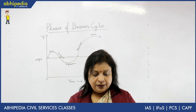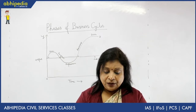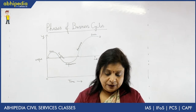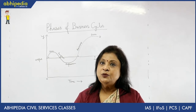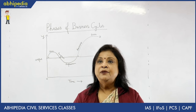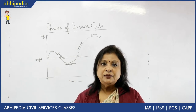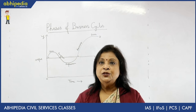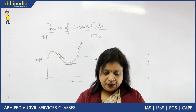Under dear money policy, the bank rate will be increased, CRR (cash reserve ratio) and SLR (statutory liquidity ratio) will all be raised by the central bank. During recession and depression, naturally, a cheap money policy will be adopted.